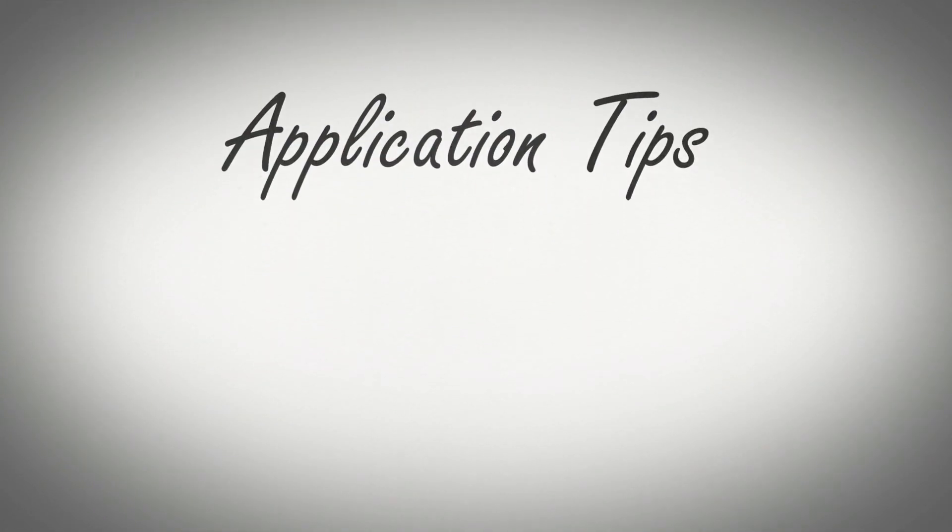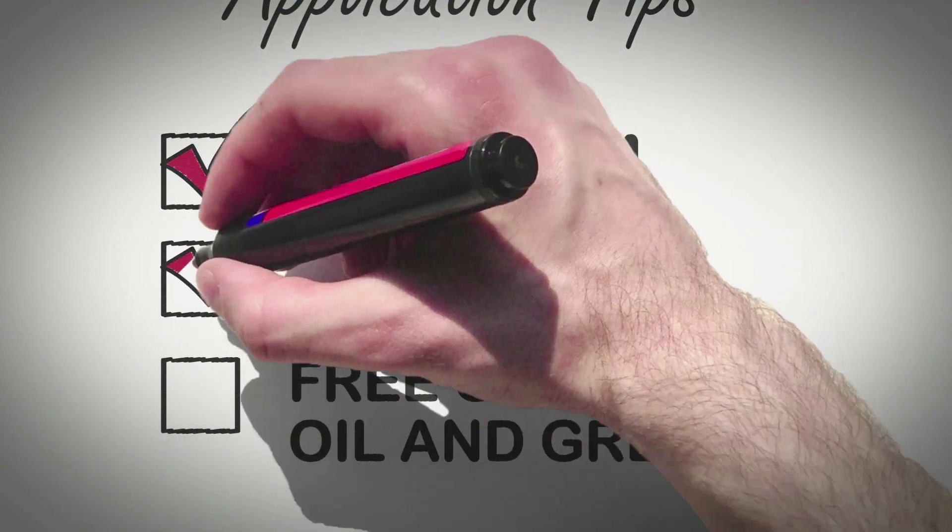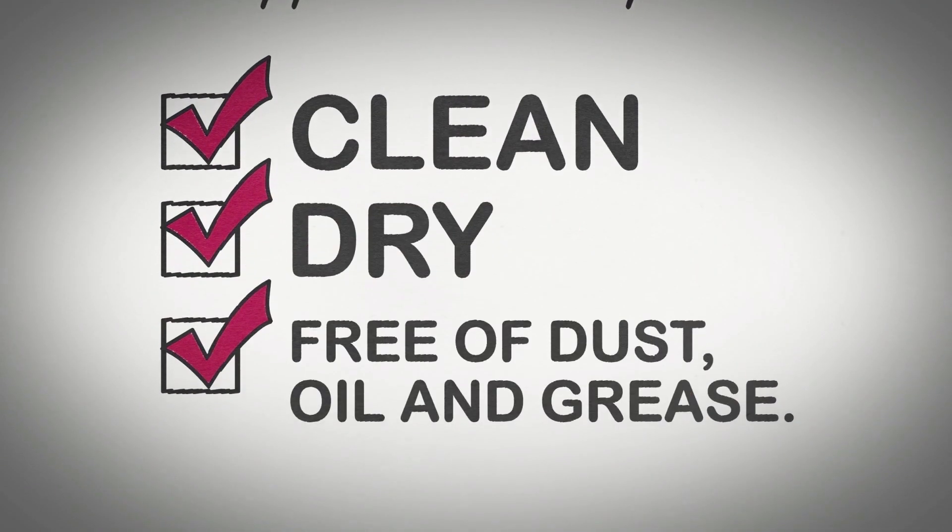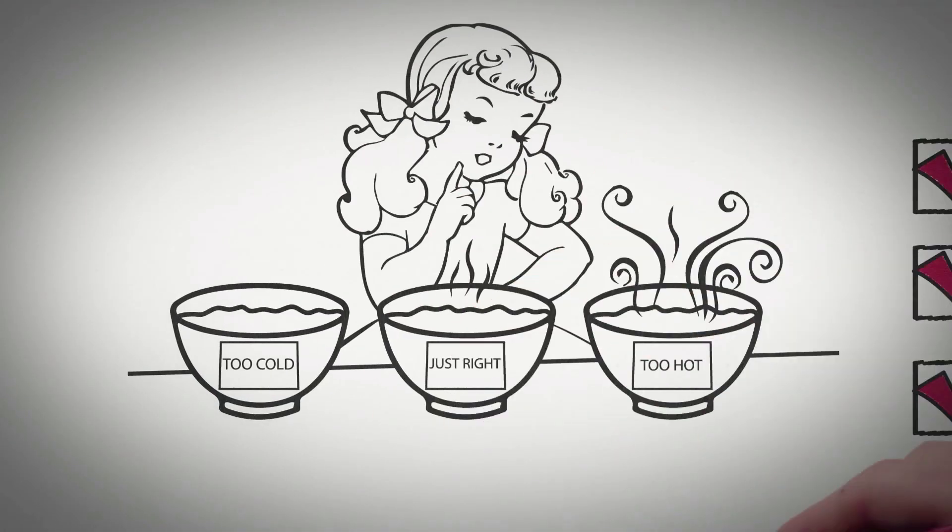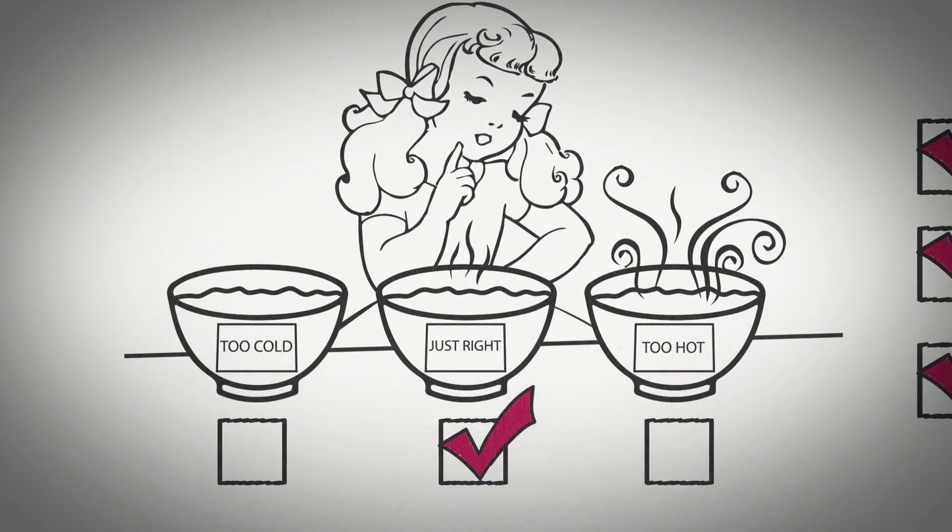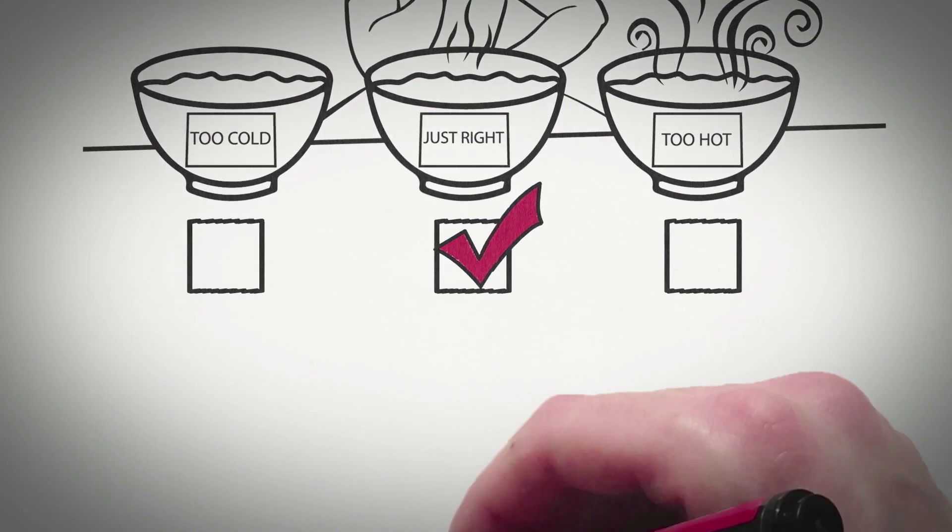Application tips. Materials being bonded must be clean, dry, and free of dust, oil, and grease. Hot melt adhesives must be applied at the correct temperature. The temperature of the materials and surroundings can affect adhesion.